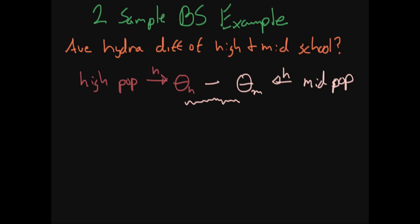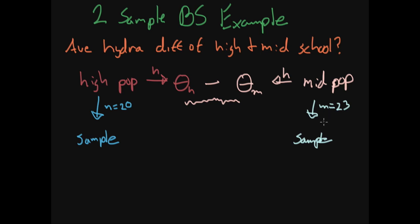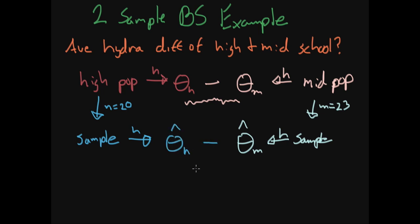So what do we do instead? We take samples. From the high school, we take a sample — let's say we talk to 20 people, so N equals 20. We do the exact same thing in middle school, getting a sample of M equals 23. The sample sizes don't need to be the same. Based on the plug-in principle, we apply hydration to each sample to get theta-hat sub M and theta-hat sub H, and we subtract them to get a good estimate of the average hydration difference between high schoolers and middle schoolers.